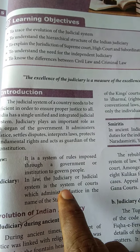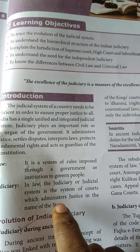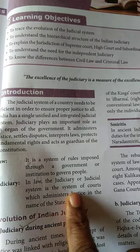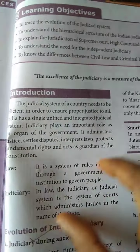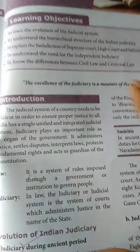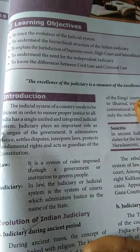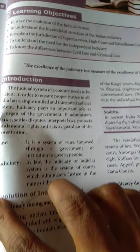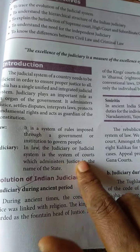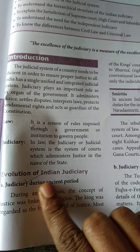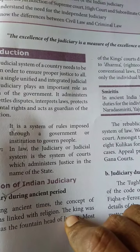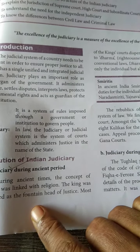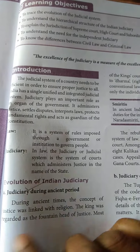The judicial system, or judiciary, is a system of courts which administers justice in the name of the state. Now, what is meant by the evolution of Indian judiciary? What is meant by the ancient and medieval period? During ancient times, the concept of justice was linked with religion.